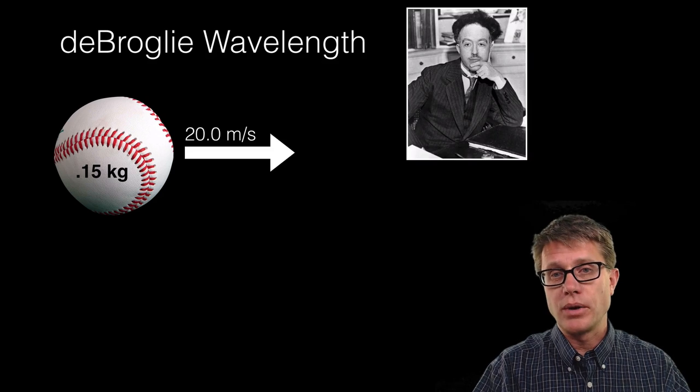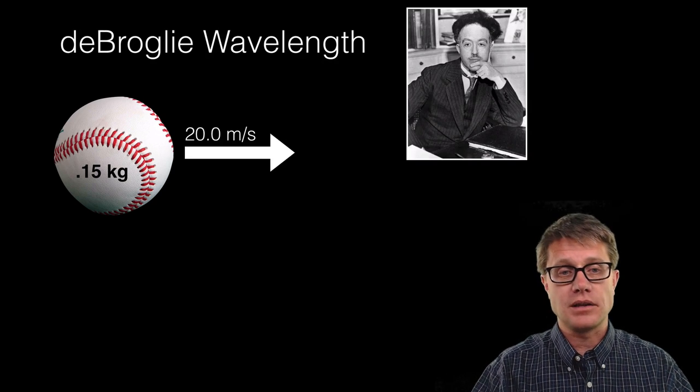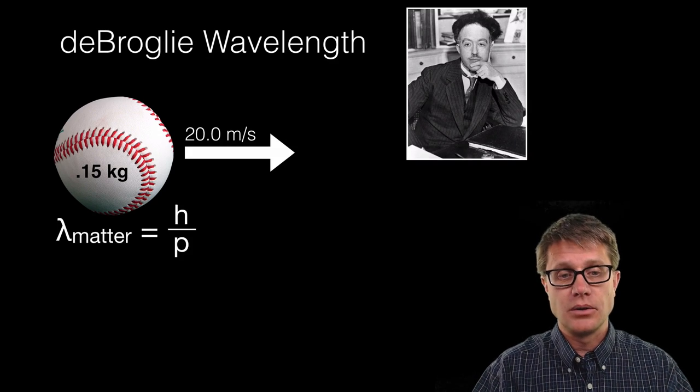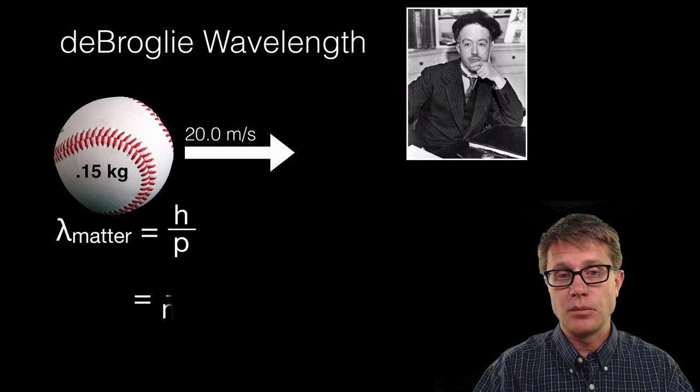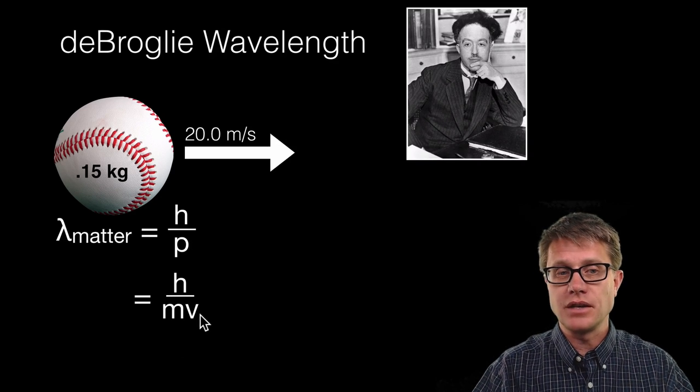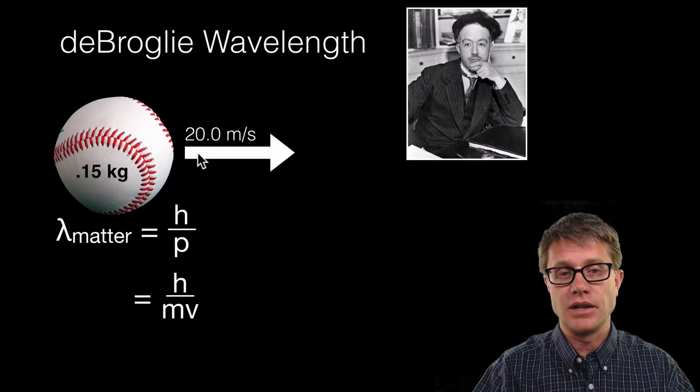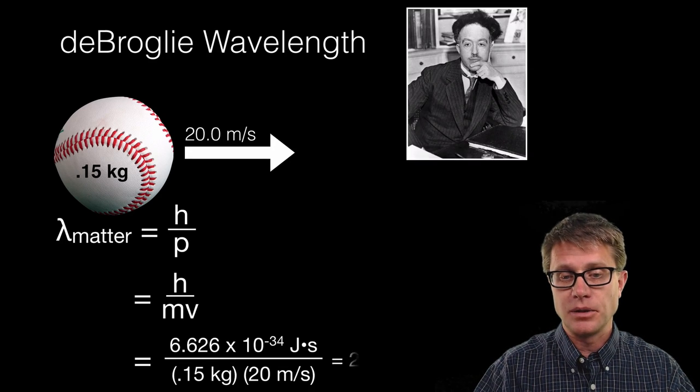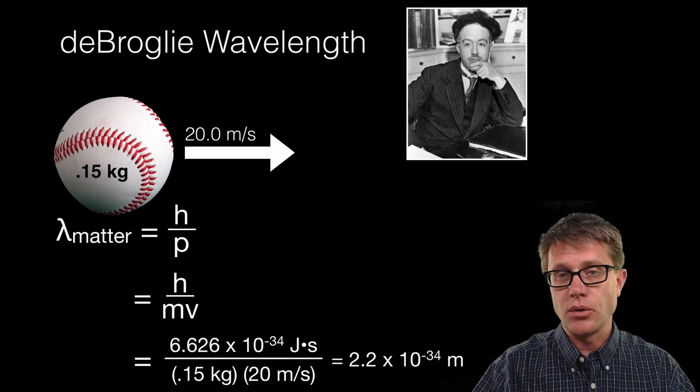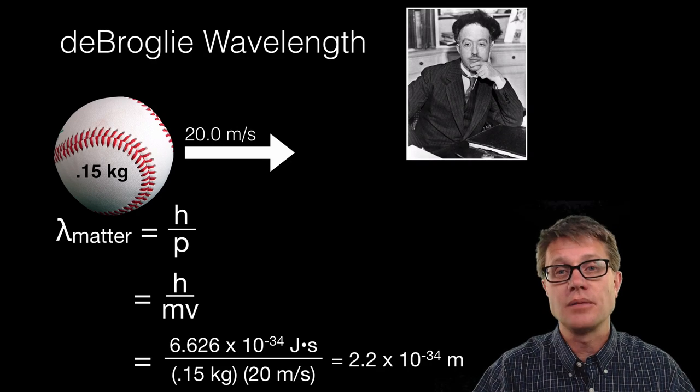And so let's apply the de Broglie wavelength to a large object, like a baseball. And so it is equal to Planck's constant divided by momentum. Remember, momentum is simply mass times velocity. If I know the mass of the object, the velocity of the object, I simply plug those in and I get a de Broglie wavelength that is incredibly small.